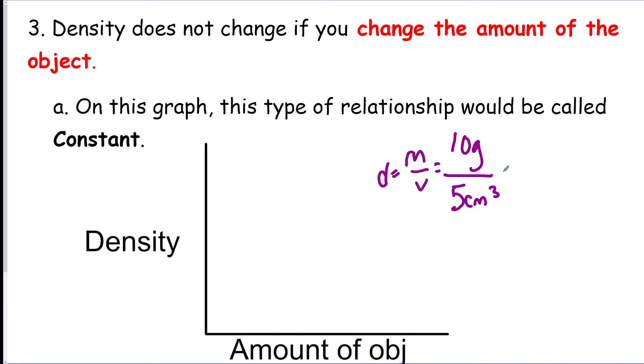So if I were to divide that, the density would be 2 grams per centimeters cubed for my object. Now if I were to cut that in half, I would have a mass of 5 grams and a volume of 2.5 centimeters cubed.